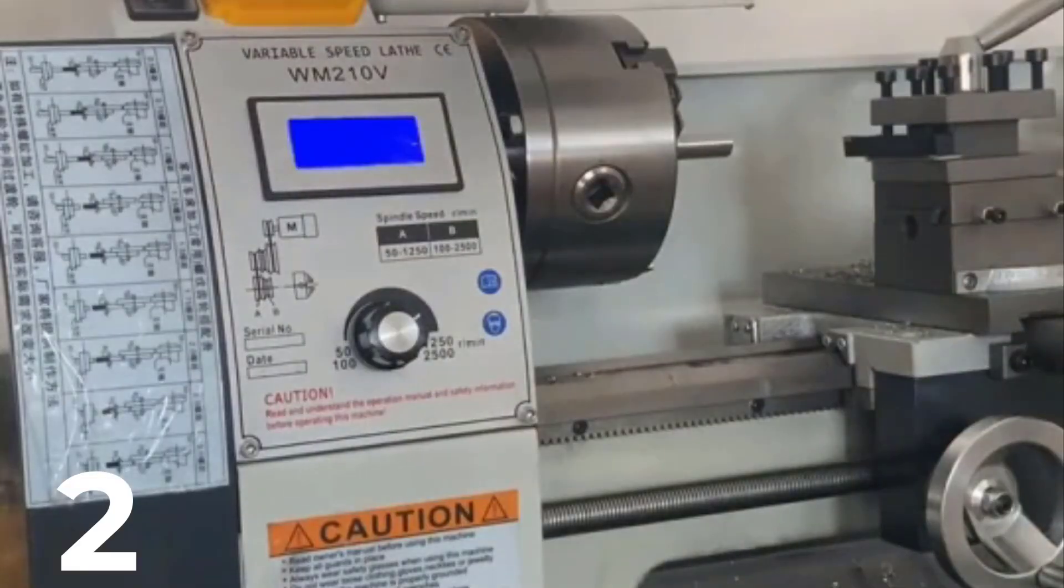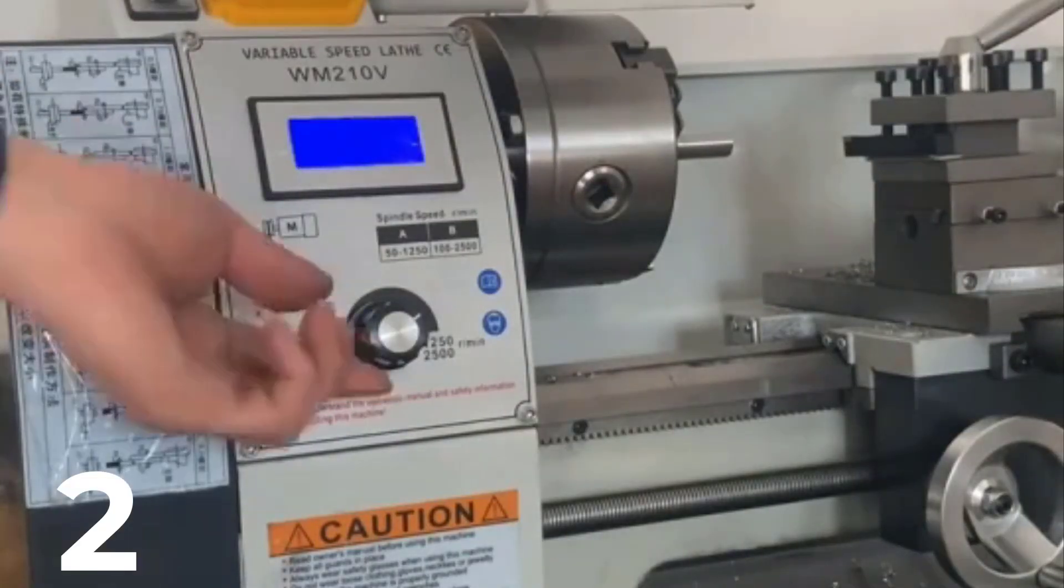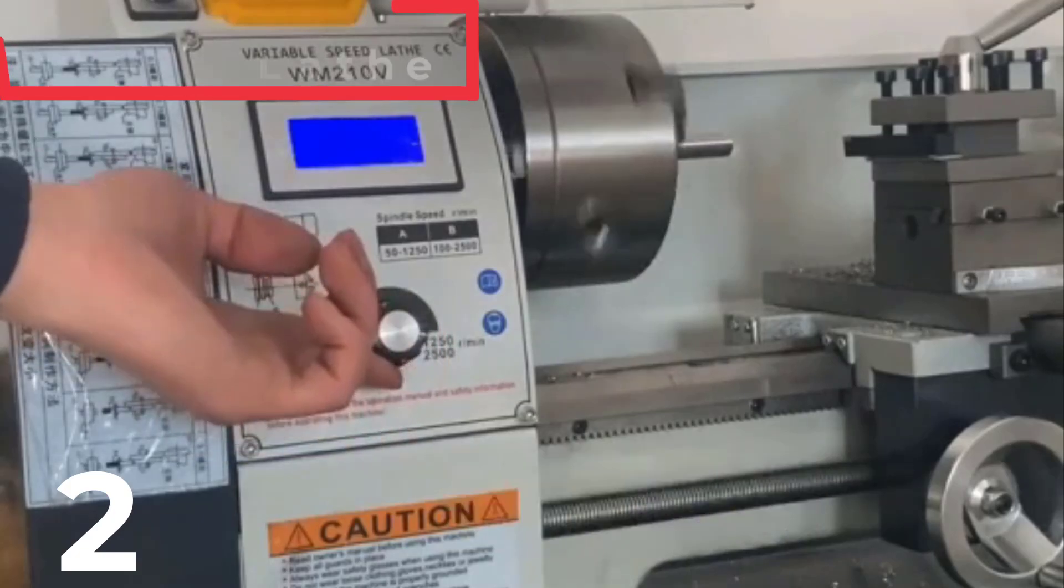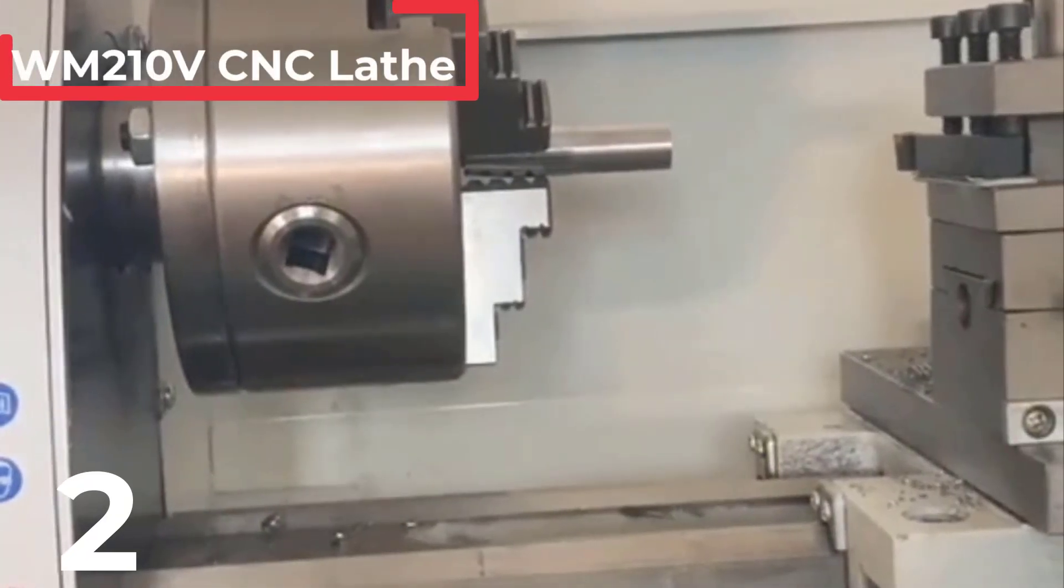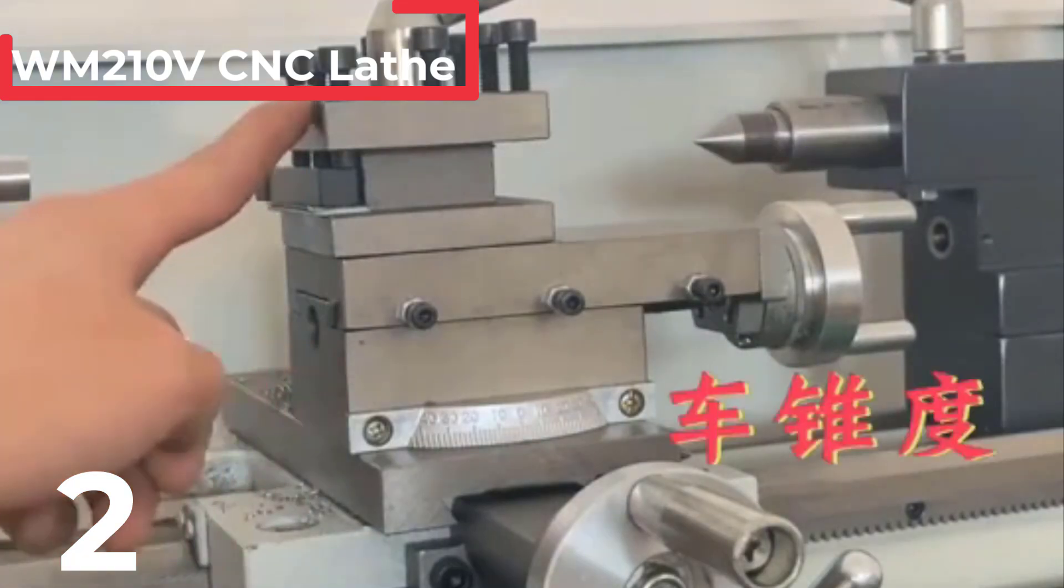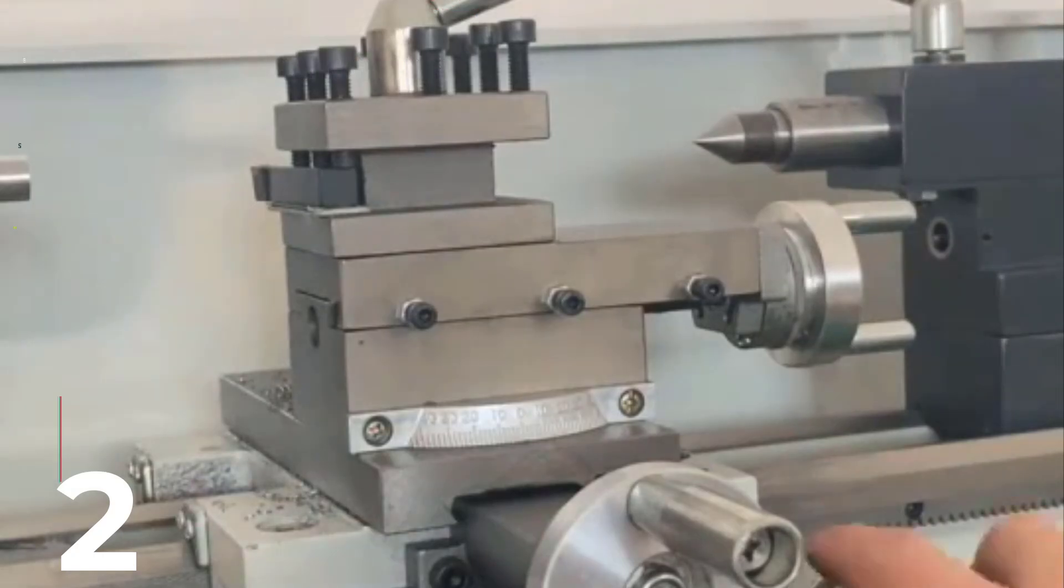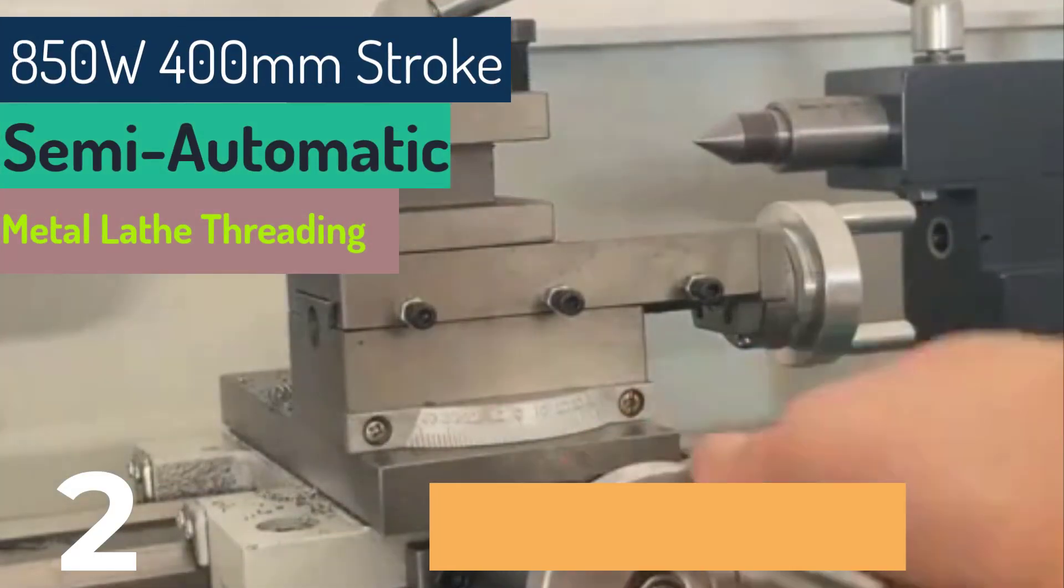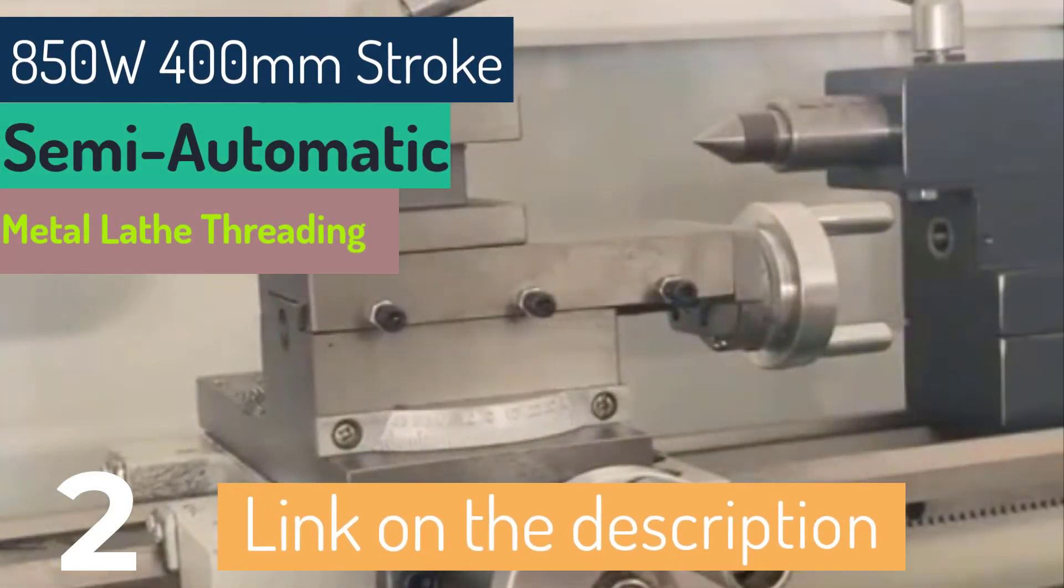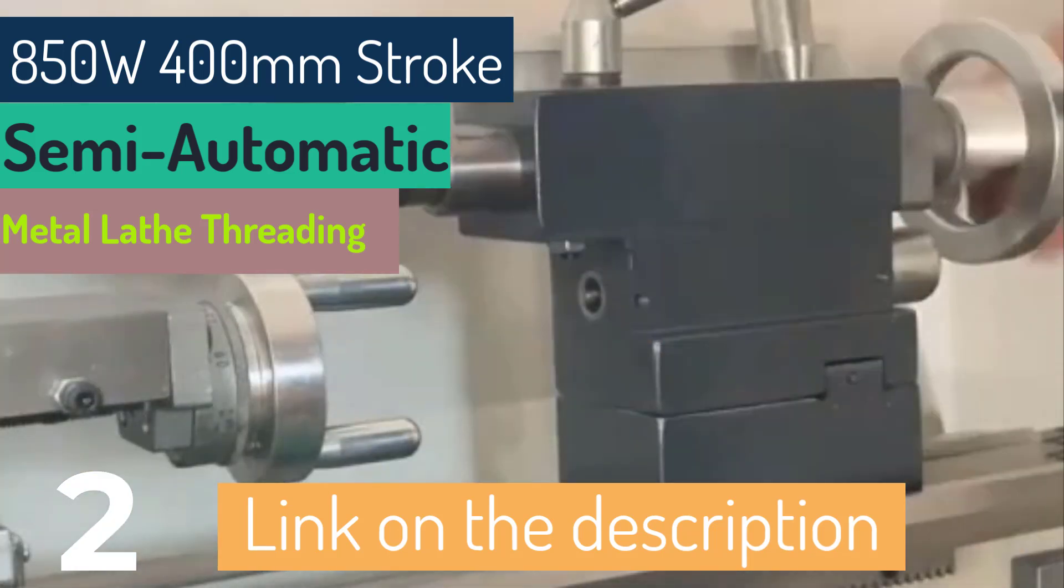The WM210V CNC lathe is a high performance, semi-automatic metal lathe designed for precision threading and machining tasks. With an 850 watt motor and a 400 millimeter stroke, this mini CNC machine tool offers stepless speed regulation for versatile operation. It features a horizontal type design and is certified with CE for quality assurance.